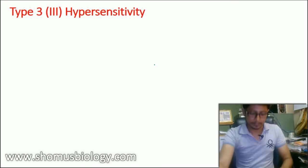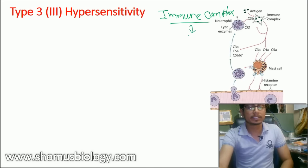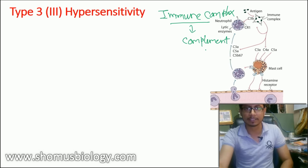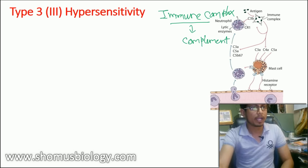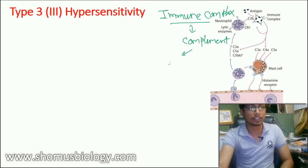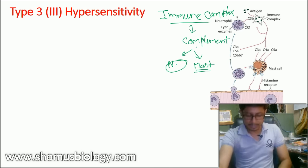Type 3 hypersensitivity is immune complex-mediated hypersensitivity. In this case the complement system is involved. The complement system can trigger two different outcomes: activation of neutrophils or activation of mast cells. Either way, it leads to destruction of tissue and body cells.